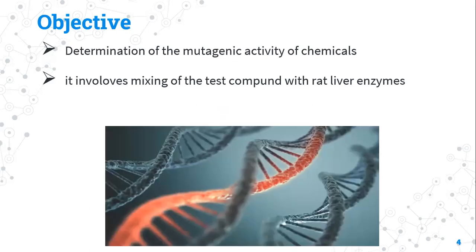The objectives of the Ames test: it is used to determine the mutagenic activity of chemicals by observing whether they can cause mutation in a sample bacteria. One of the most important aspects is that it involves mixing the test compound with rat liver enzyme. Many chemicals are not directly mutagenic, but when metabolized by liver enzymes they can cause mutagenic forms. We add rat liver enzyme to mimic the liver metabolism of the body so we can correctly detect the mutagenic capacity of a compound.